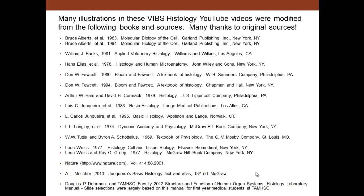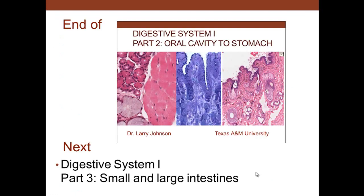We want to thank the host of different books, papers, websites, and textbooks from which images were modified for this presentation. That concludes digestive system part one, part two — covering the oral cavity to the stomach. The next part will cover the small and large intestines.